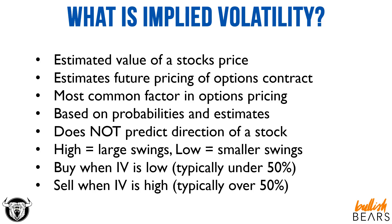I'm going to explain the differences between implied volatility rank and percentile and how to get a better gauge with implied volatility. But typically, you become an options buyer when the implied volatility is low — generally under 50%. And you become an options seller when IV is high, typically over 50%.